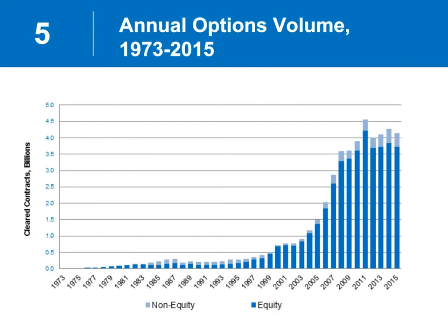One of my very favorite slides is the snapshot of the growth of the listed options industry. We started back in 1973 in Chicago with 16 different companies. We've currently got over 4,200 different products that we list options on — an enormous growth. When the industry started back in '73, there were only calls. The SEC had not even approved the put contract until a few years later, either 1977 or 1979. We grew into 4, 5, 6 exchanges. But you can see in 1999, 2000, 2001, option volumes started to grow rather significantly.